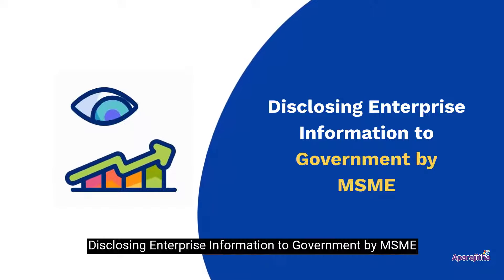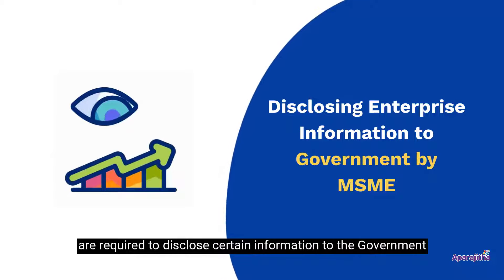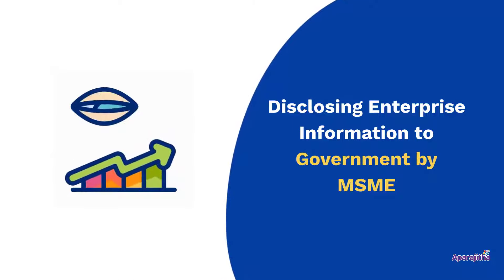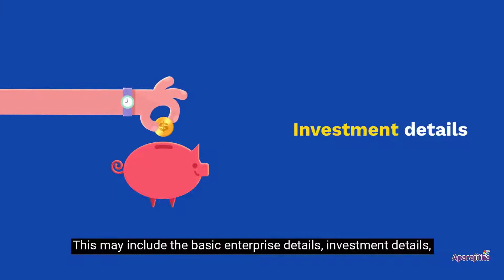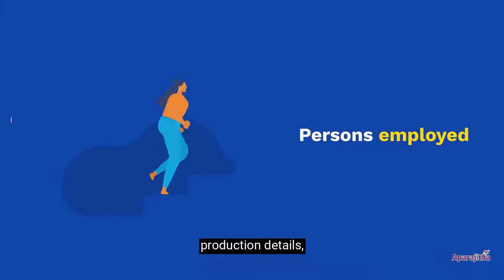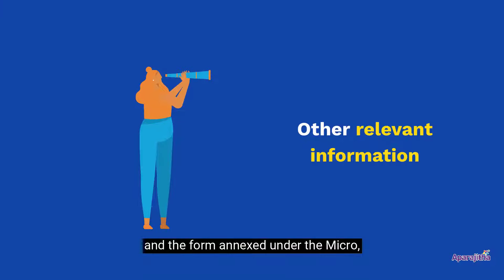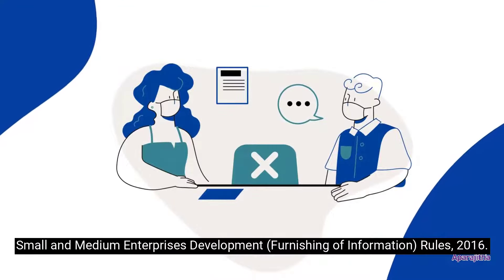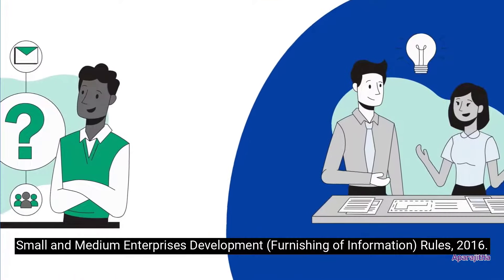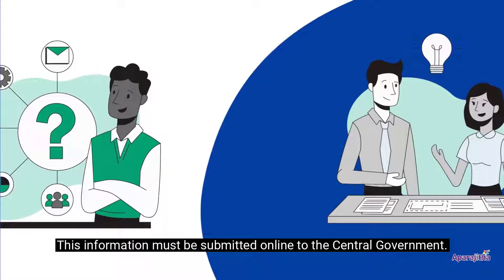Seventh, Disclosing Enterprise Information to Government by MSME. MSMEs are required to disclose certain information to the government. This may include basic enterprise details, investment details, production details, persons employed, and other relevant information as per Rule 3 in the form annexed under the Micro, Small and Medium Enterprises Development Furnishing of Information Rules, 2016. This information must be submitted online to the central government.